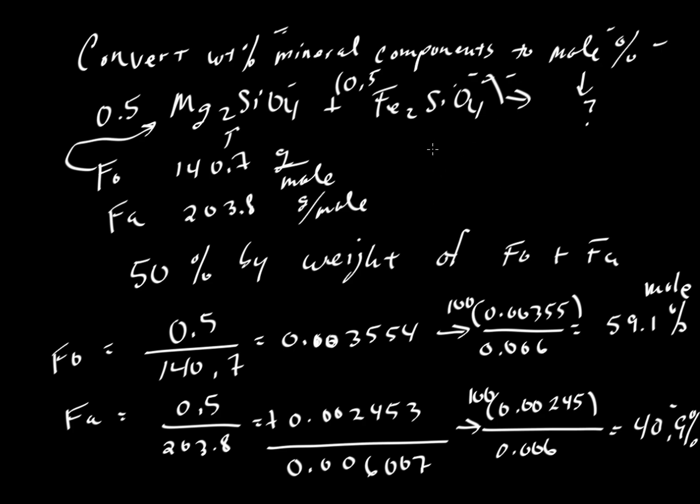Now, how would we write this? We usually write it, writing the letter Fo with subscript, and then we would write 59.1. This would be equivalent to writing fayalite 40.9, because in olivine, there are really only two major components.